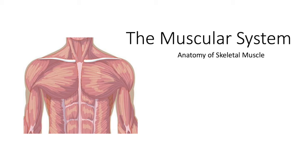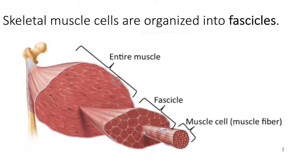When we look at a muscle in cross-section, we can see that it is organized into smaller units called fascicles. So an entire muscle is made up of bundles of fascicles. If we look more closely at a fascicle, we see that each fascicle is made up of bundles of even smaller units.